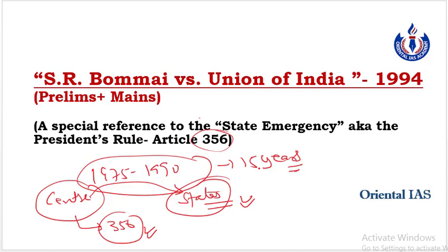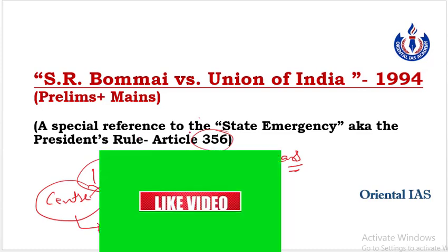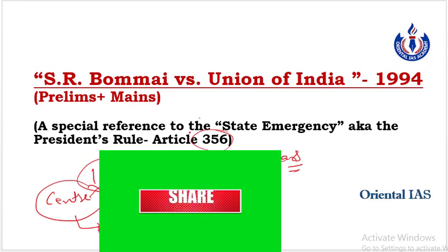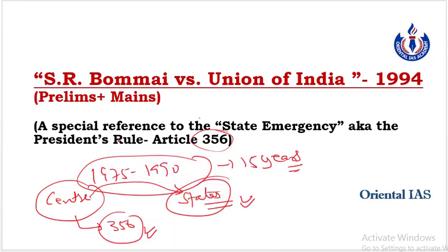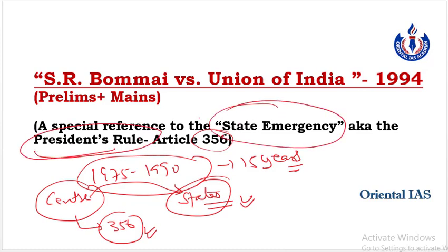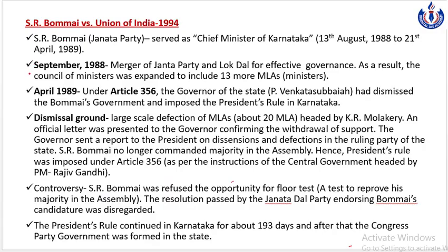Mein aapko saral bhasha mein batata hoon. Article 356 president ko ye authority deta hai ki yadi kisi state ki government constitutional provisions ko breach karti hai, ya us state ko constitution ke according run karna mushkil ya namumkin ho jaata hai, tab central government through the governor of the state direct control assume kar sakti hai - and this direct control is called President's Rule. President's Rule ko hum state emergency ke naam se bhi jaante hain, and once President's Rule is imposed, entire council of ministers including the Chief Minister is disbanded.